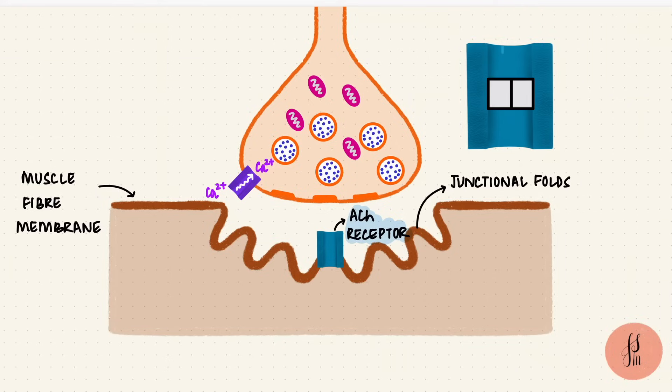In adults, this channel has five subunits: two alpha, one beta, one epsilon, and one delta. Acetylcholine binds to the alpha units. There are two units, so two molecules have to bind for this channel to open.